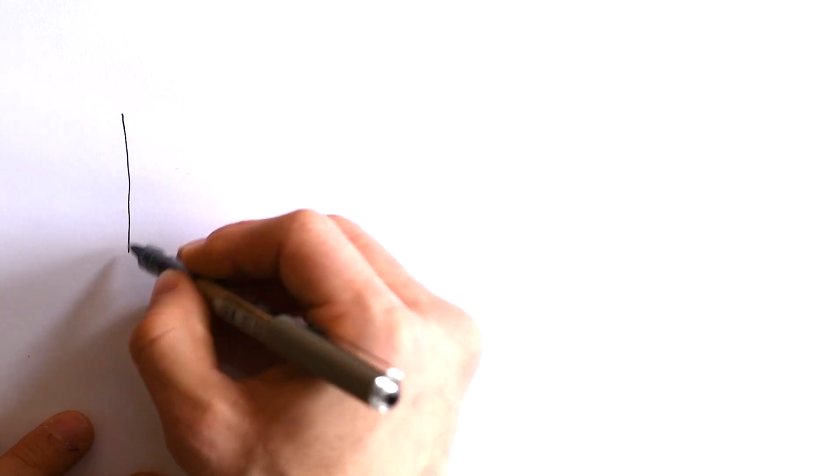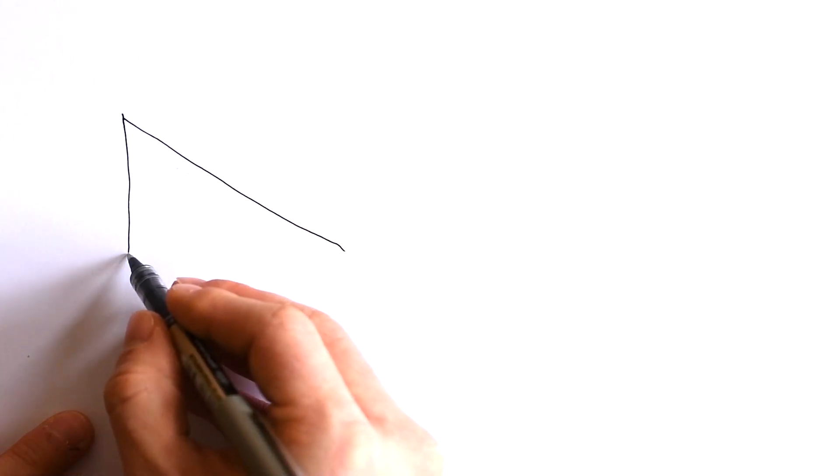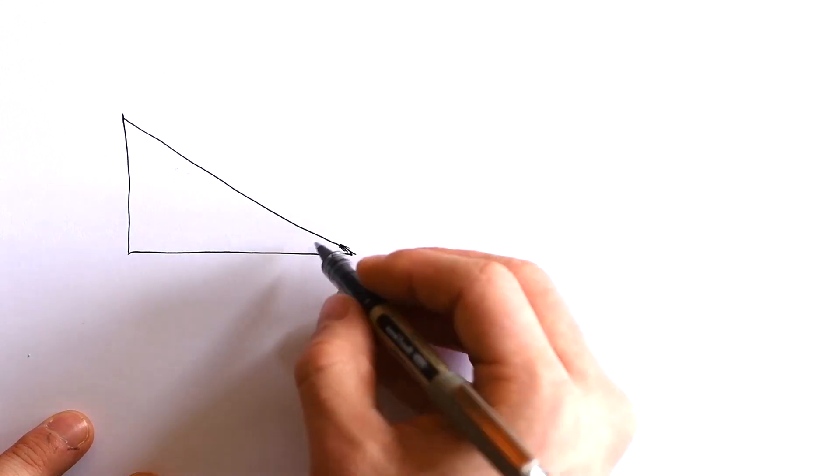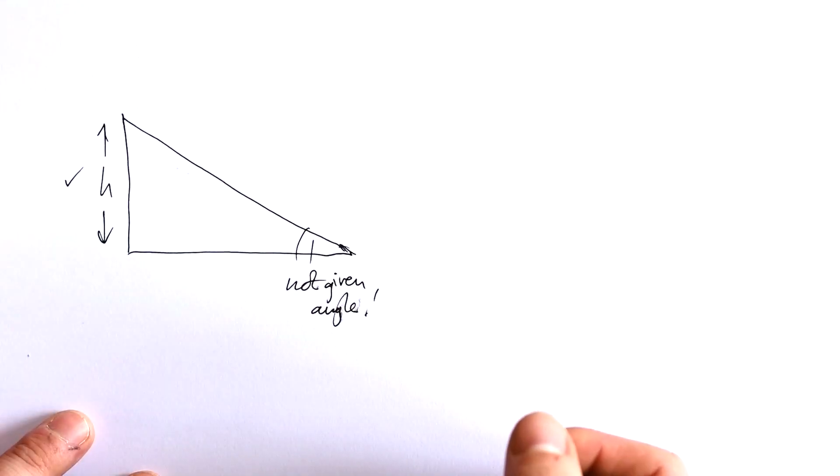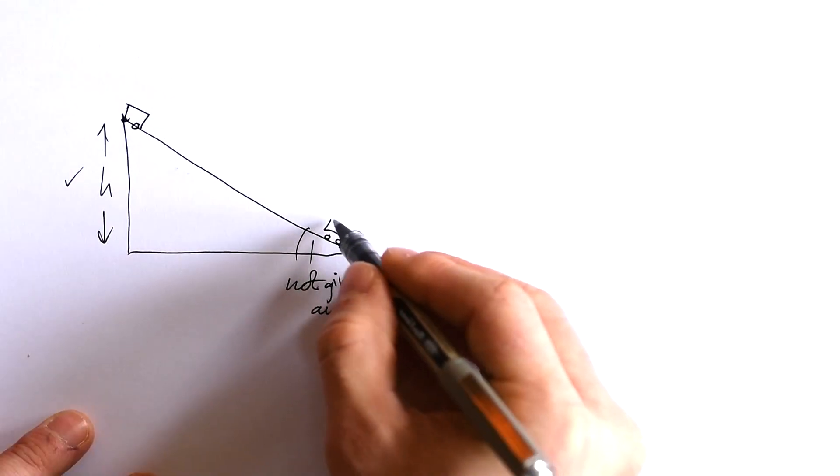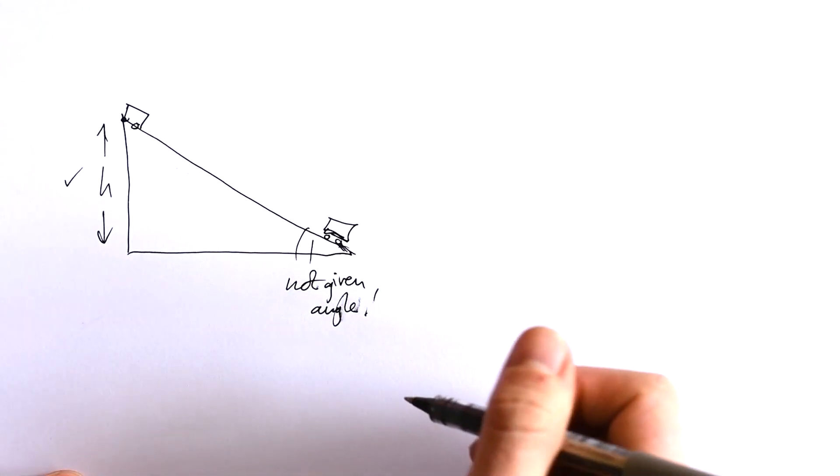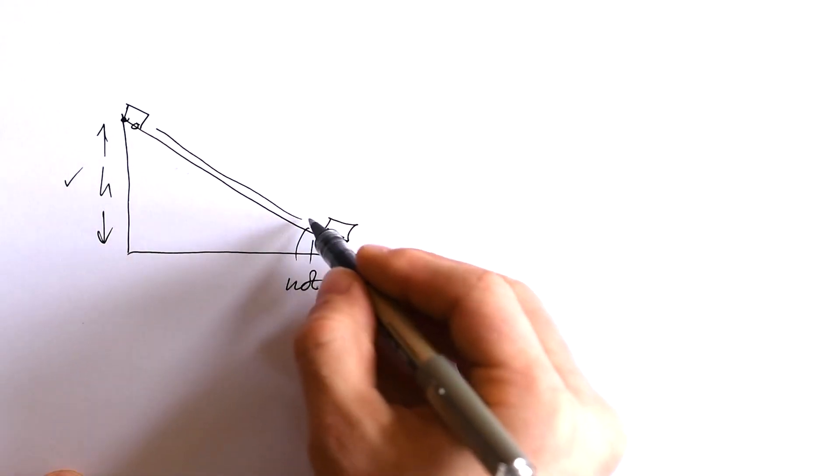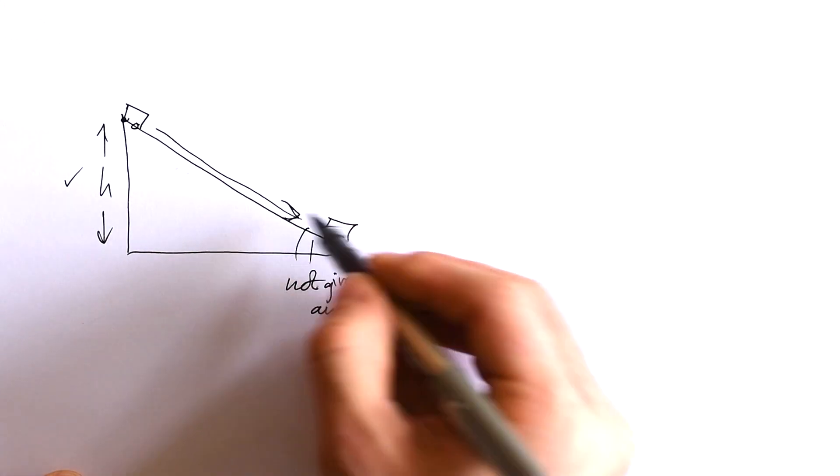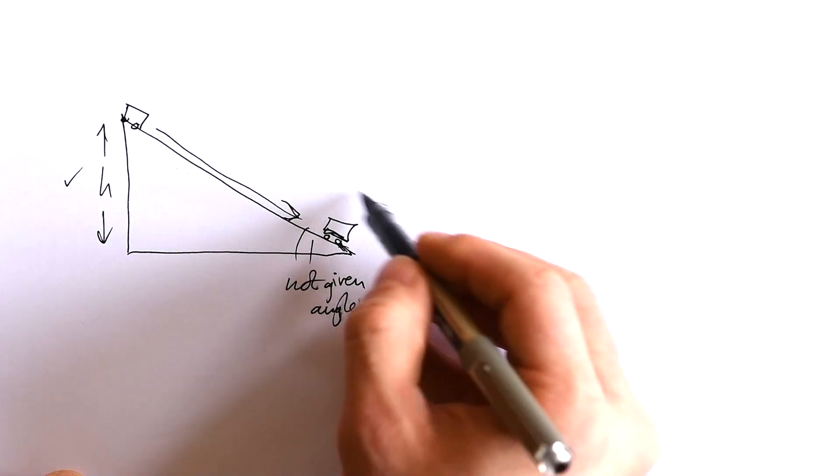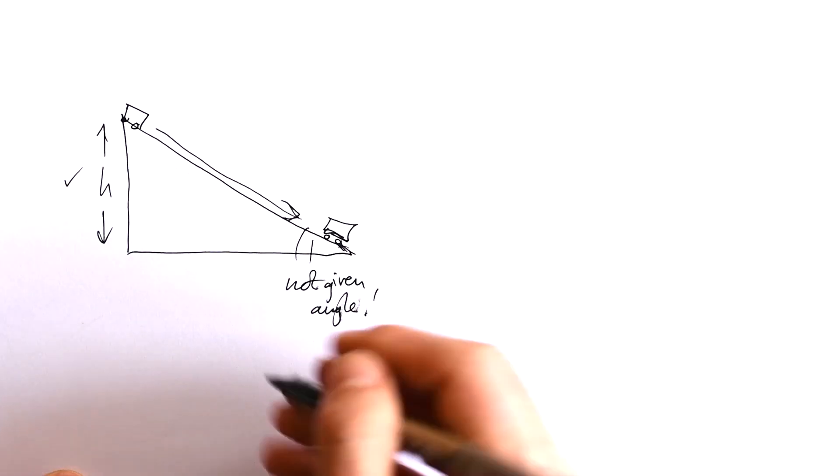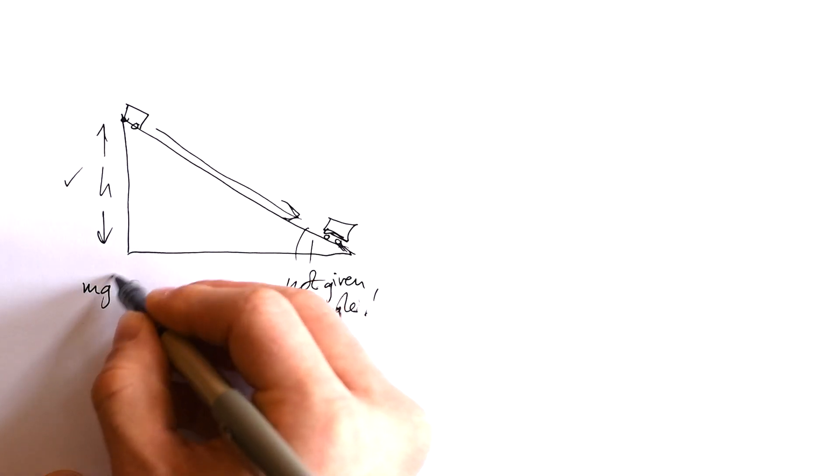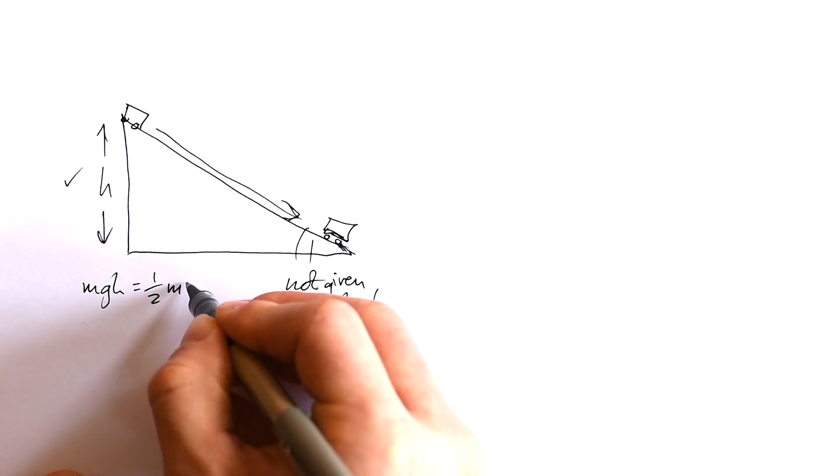This is more for A-level people, but it could crop up in GCSE as well. What if you're given a ramp like this, but you're not given the angle, but you are given the height of the ramp? Again, we're going to have to use GPE equals KE, and the exact same thing applies. This trolley that's on here will fall down, and the kinetic energy that it has at the end is going to be equal to the GPE at the start. So again, we can say MGH is equal to half MV squared.